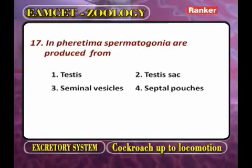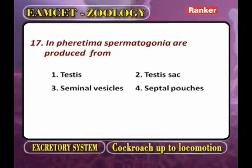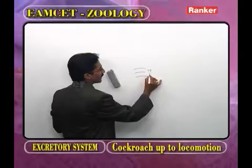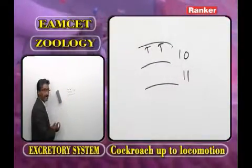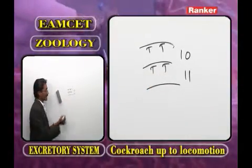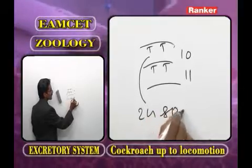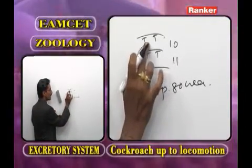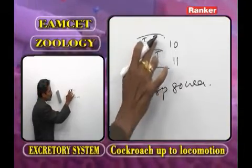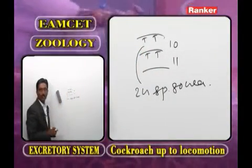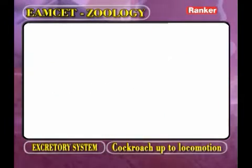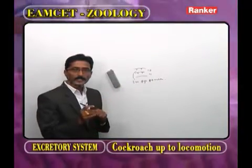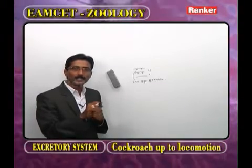In Pheretima, spermatogonia are produced from which structure? The testes in segments 10 and 11 produce diploid spermatogonia (sperm mother cells). The spermatogonia are then transferred to the seminal vesicles (septal pouches) where spermatogenesis occurs. The correct answer is testes.